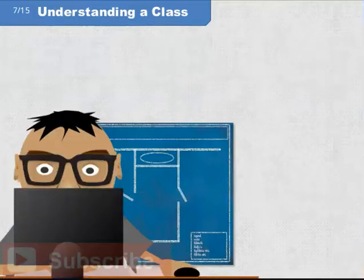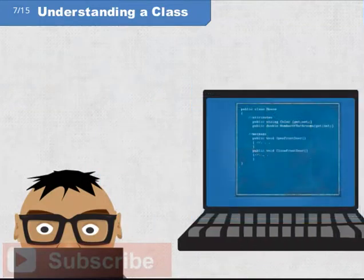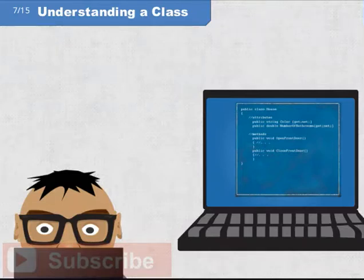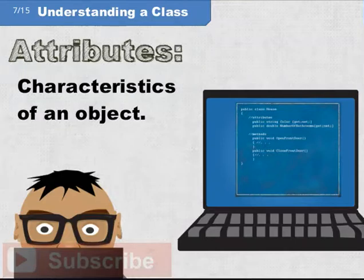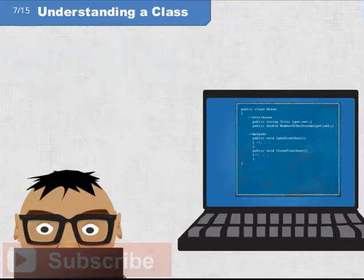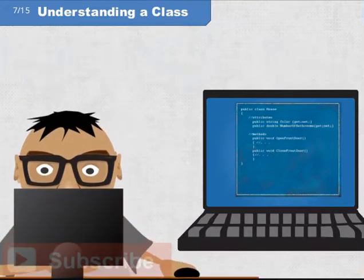A class is a blueprint for an object. Specifically, a class is code you write that defines what an object is to be. Those definitions describe attributes and behavior — attributes being characteristics of an object, and behavior being things that an object can do. Let's look at a familiar kind of blueprint: an architectural blueprint of a house.